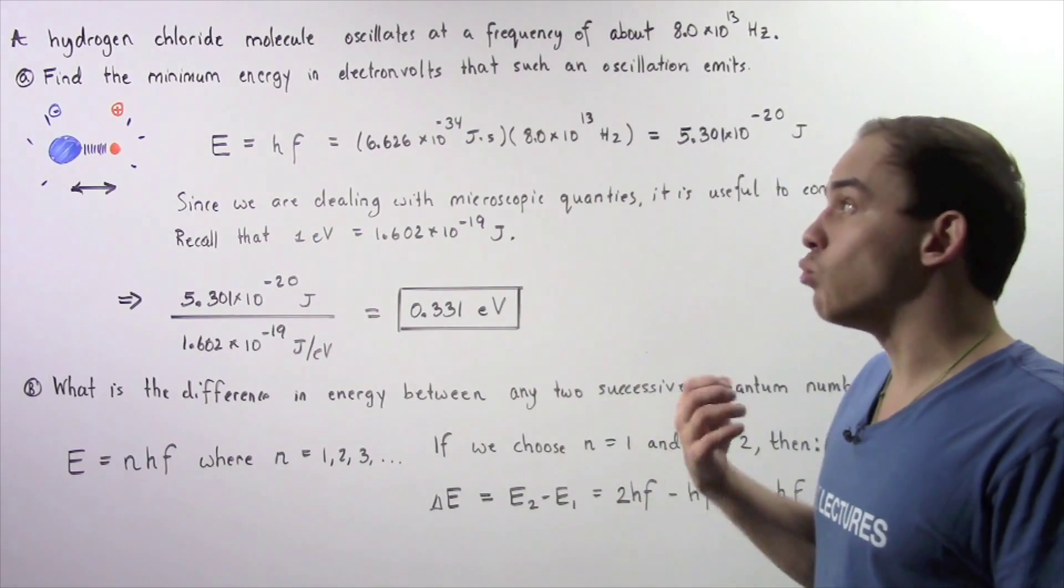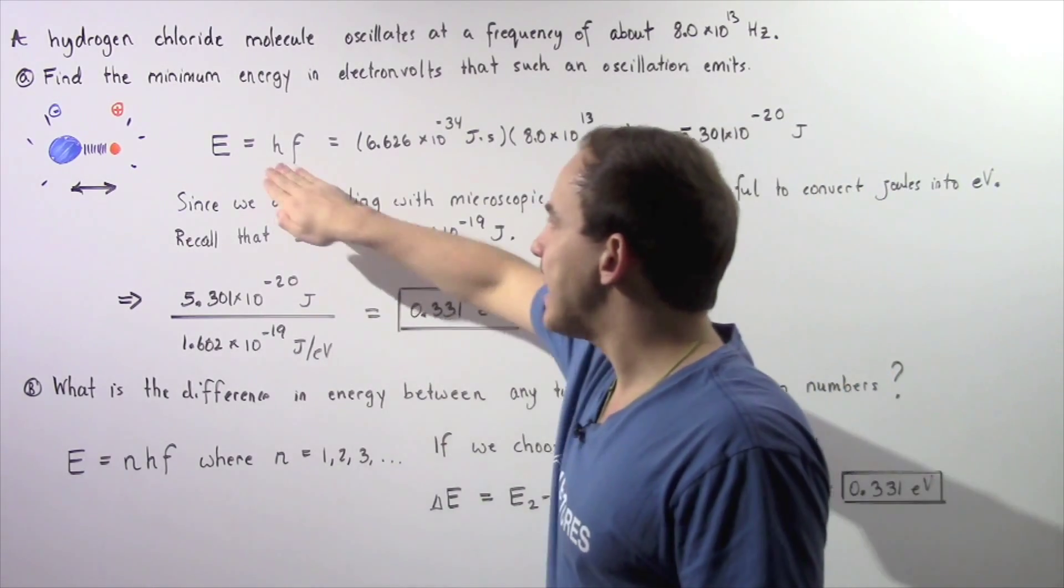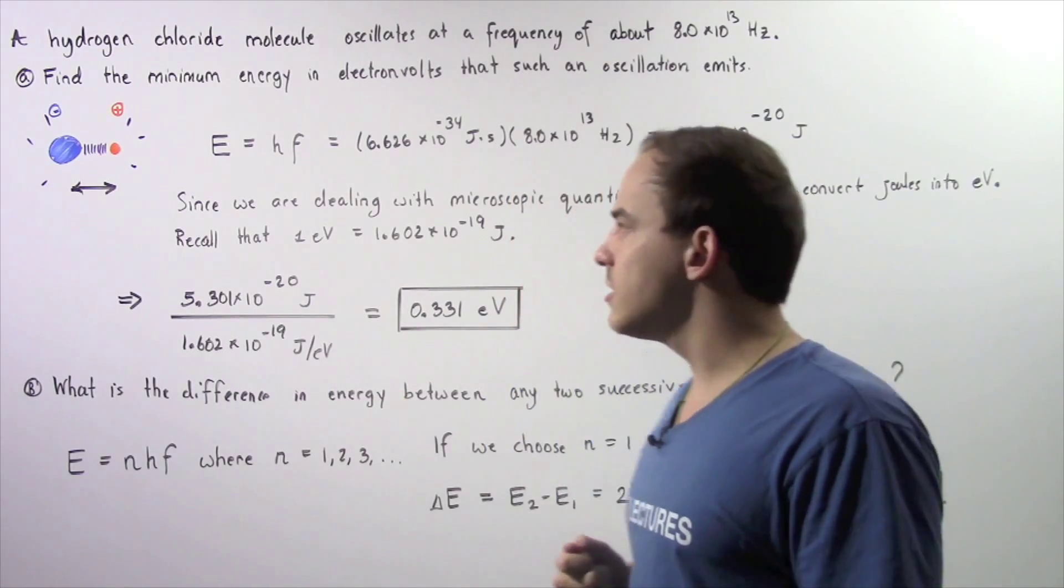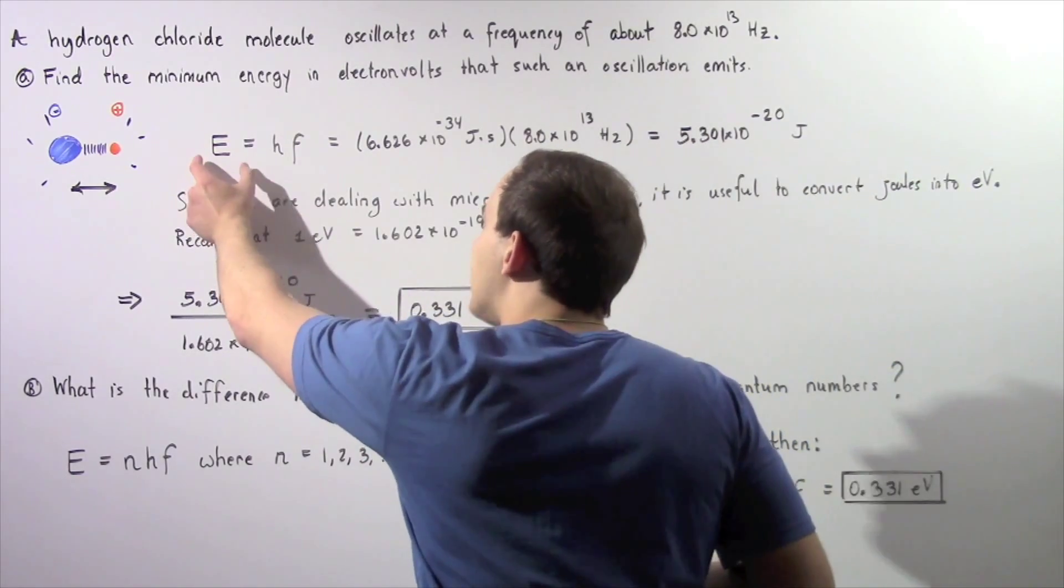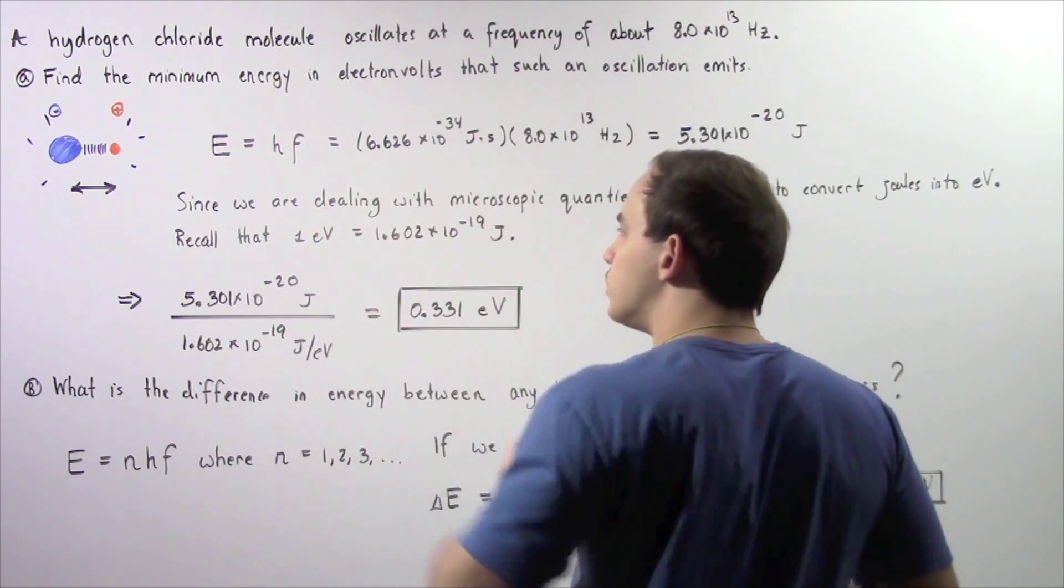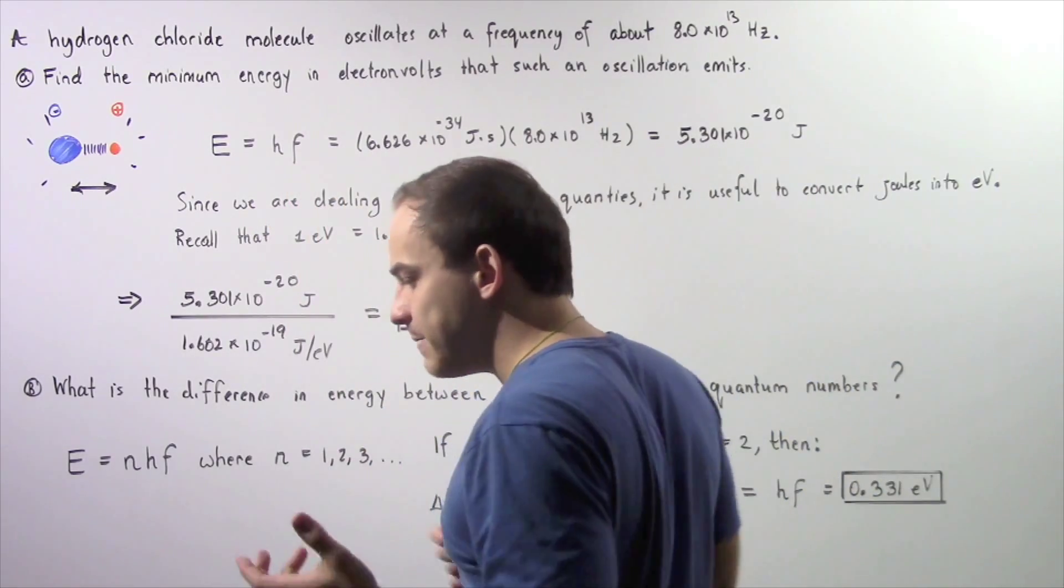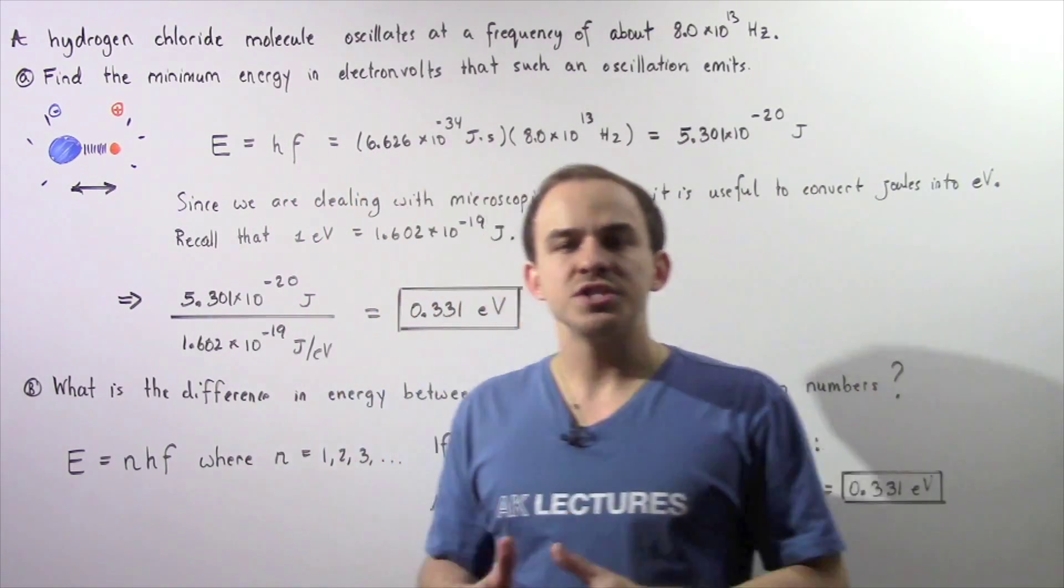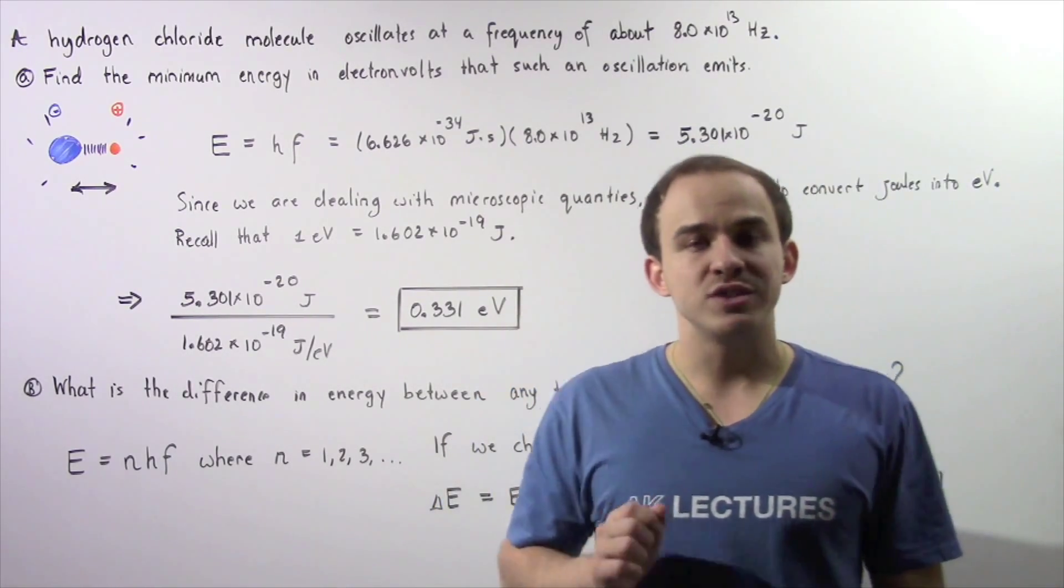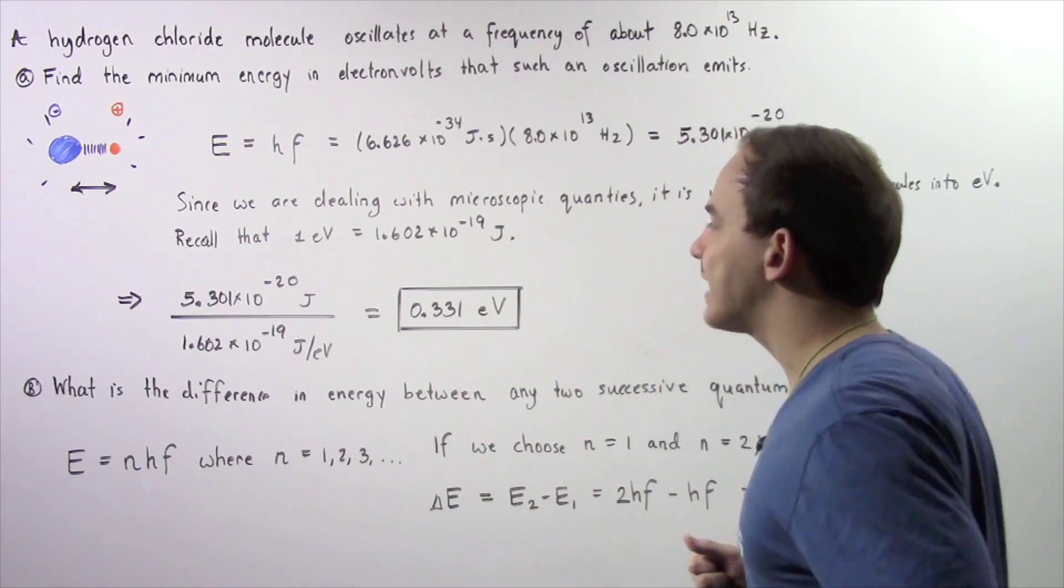So we want to calculate what that quantity of energy is. To calculate that, we have to apply the following equation, which we discussed in the previous lecture. The minimum quantity of energy is equal to the product of the frequency and Max Planck's constant. So H is simply a value that was determined experimentally. It's equal to 6.626 x 10^-34 joules multiplied by second.